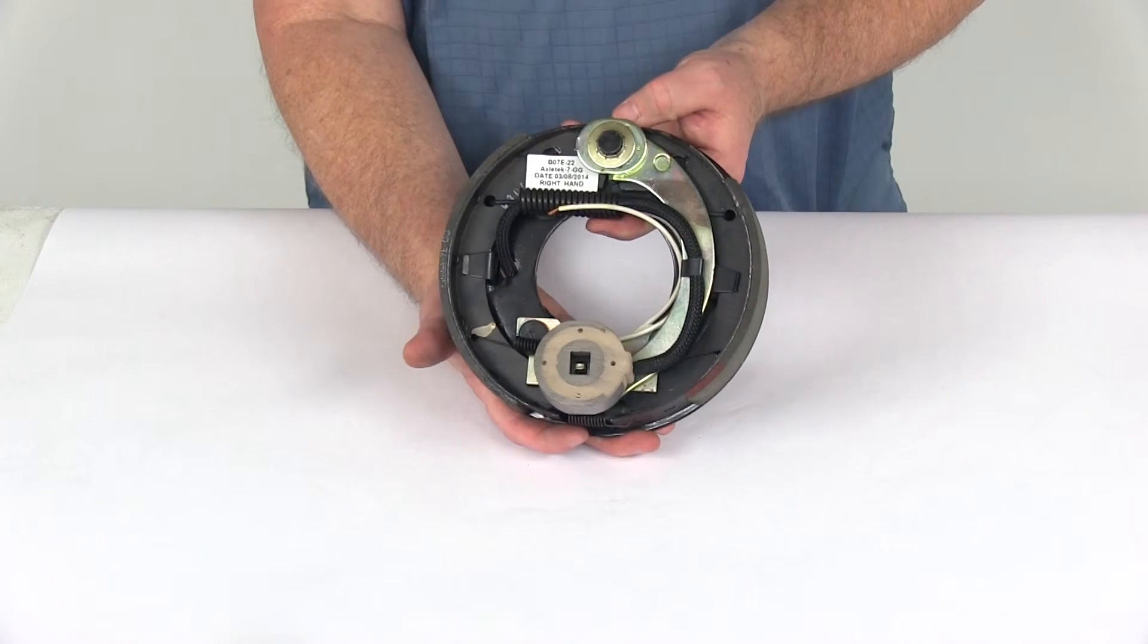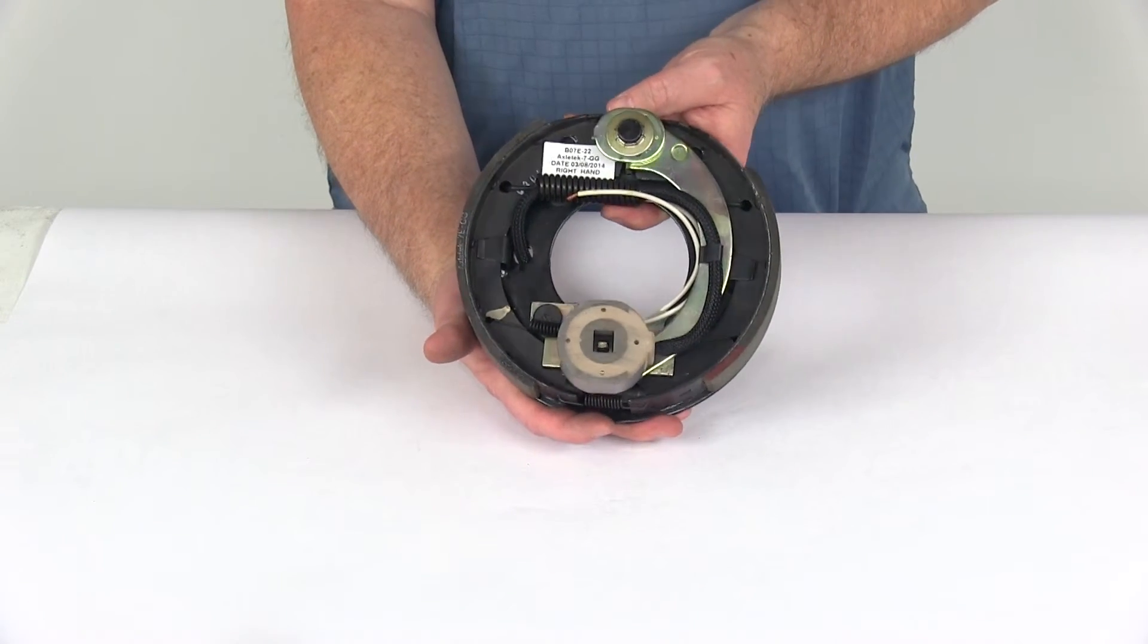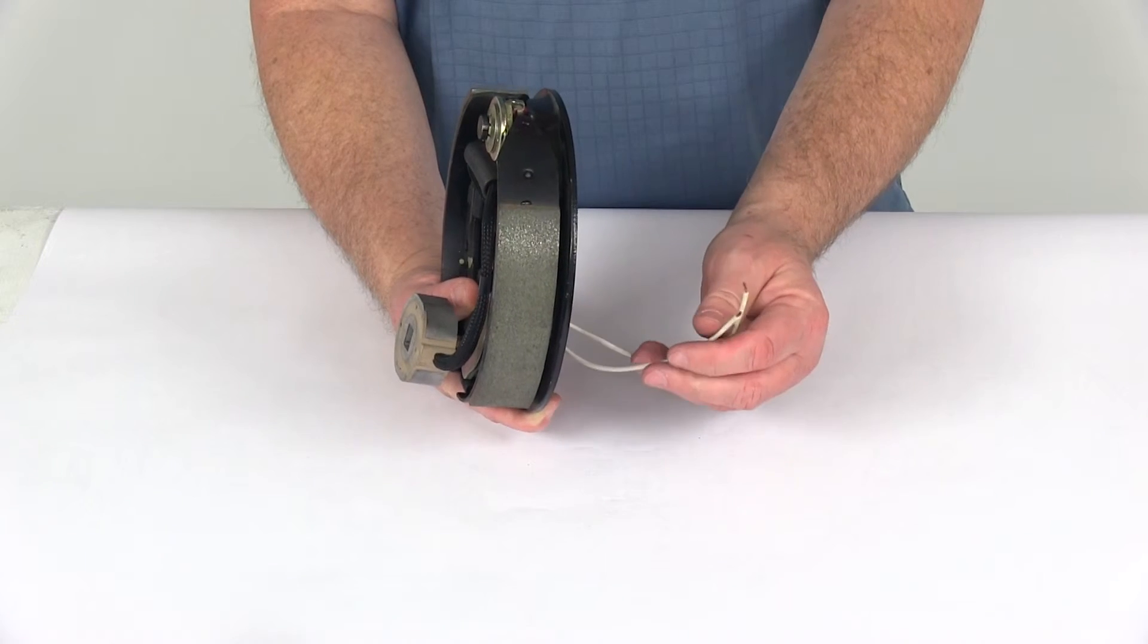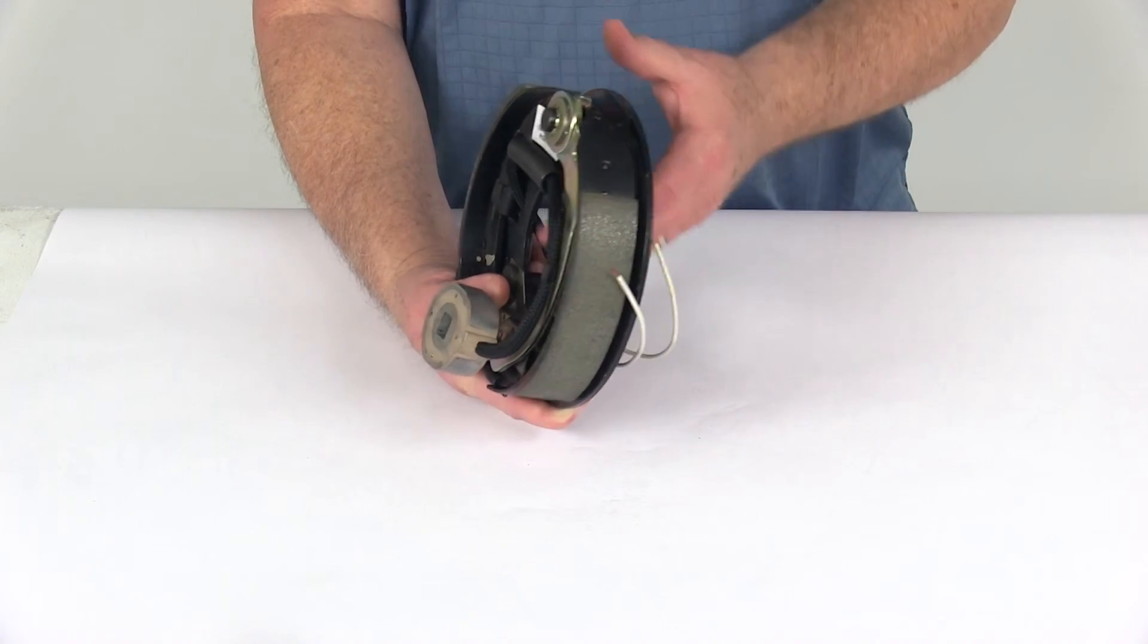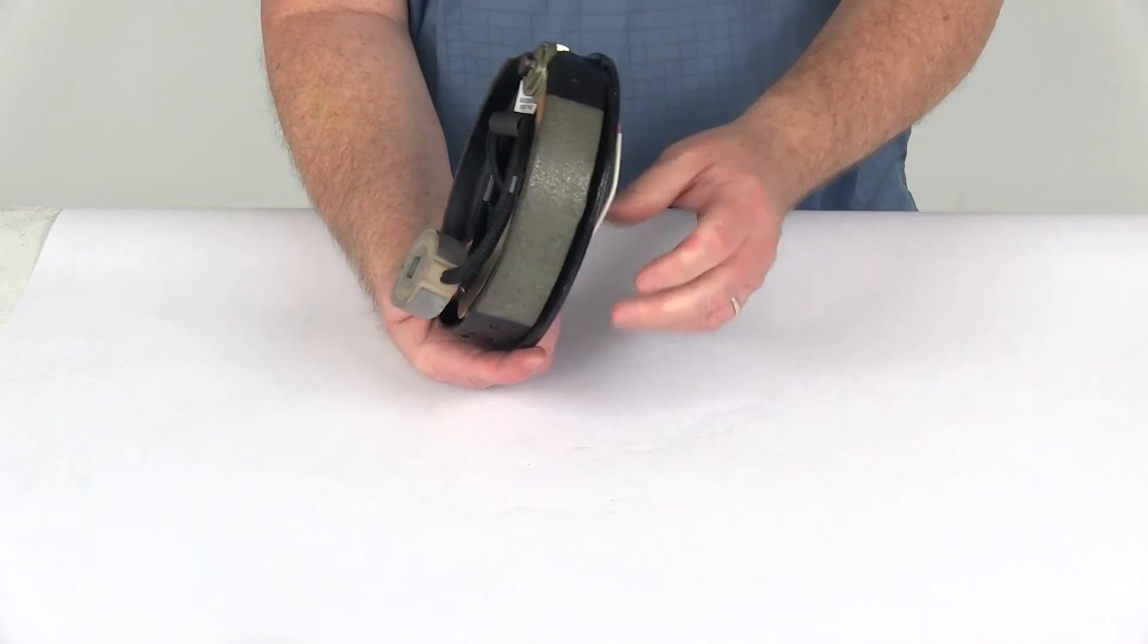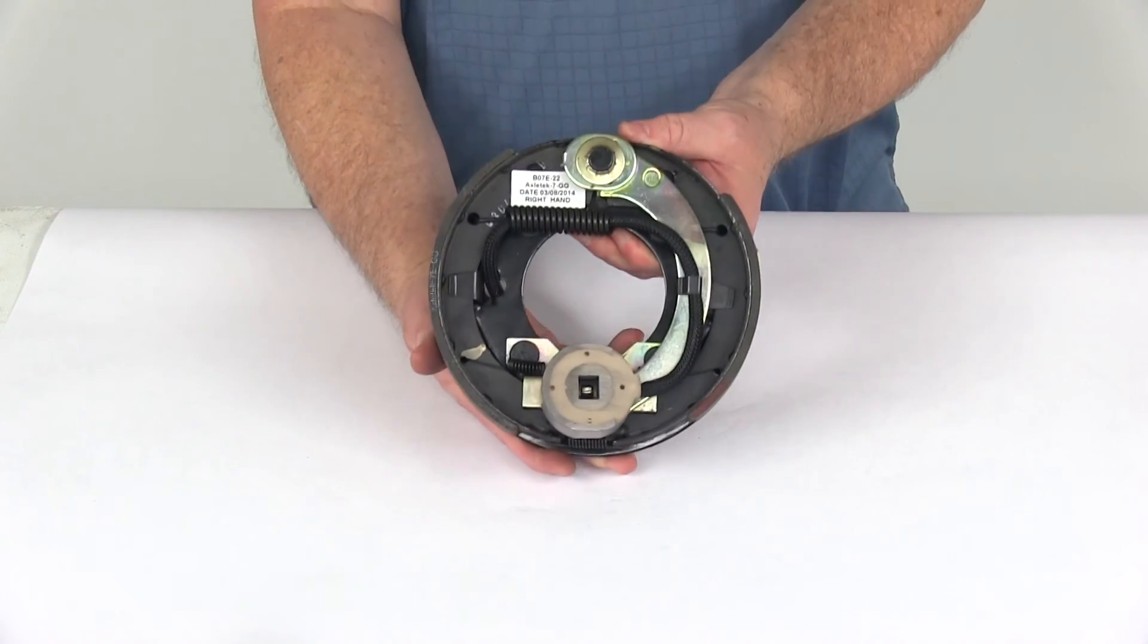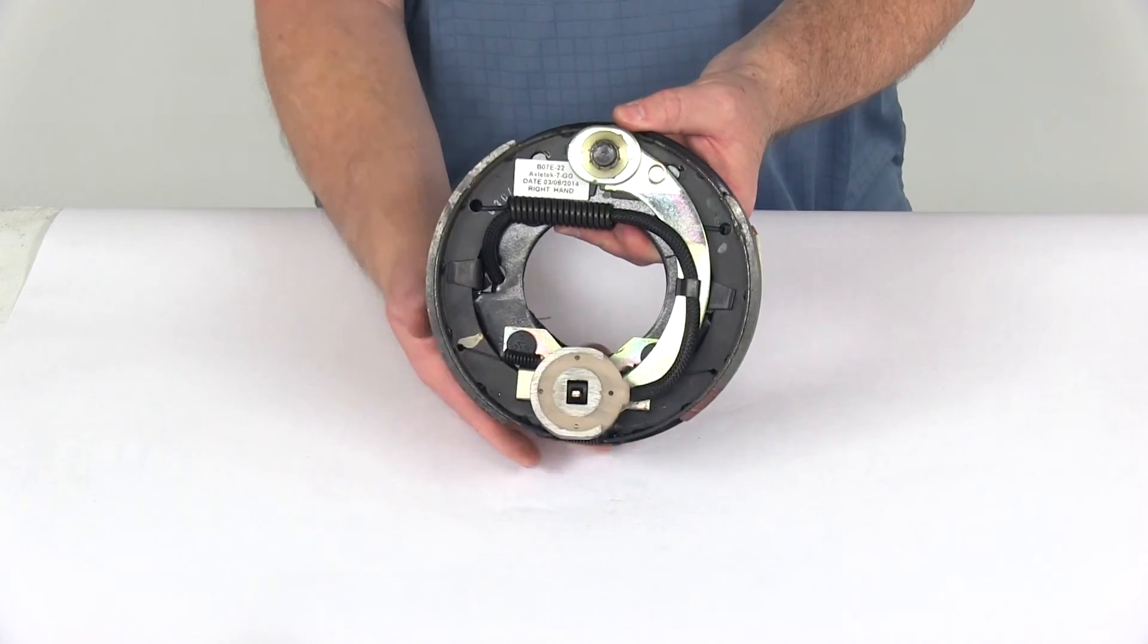This is designed for an axle rating of 2,000 pounds and uses 7-inch drums. These are electric brakes, and if you'll notice the two white wires coming out the back, they need to be connected—one needs to be grounded, the other will connect to the brake feed to supply power to this electric magnet. It doesn't matter which one's connected to which; both are white wires, so you can connect either wire for either function. That should do it for the review of the 7-inch right-hand electric brake assembly for a 2,000 pound axle.